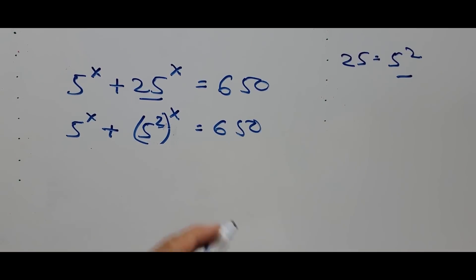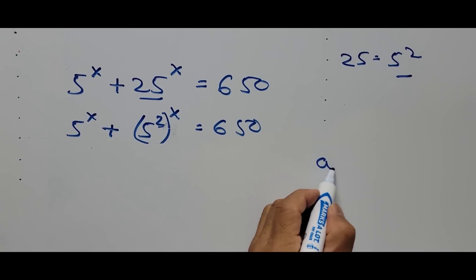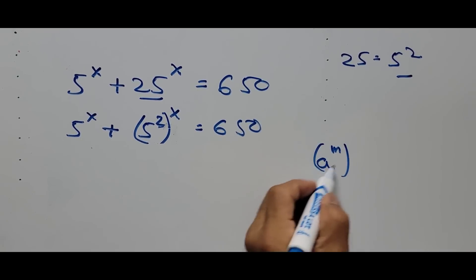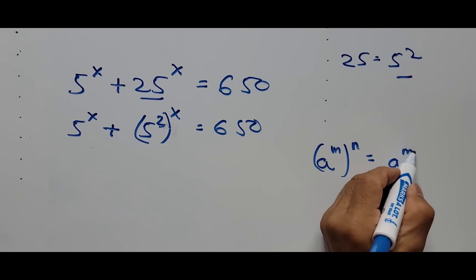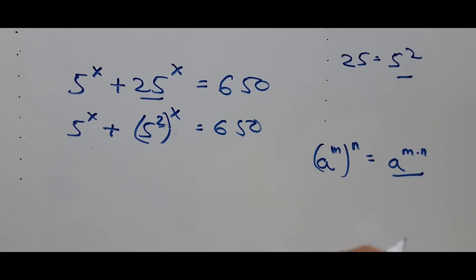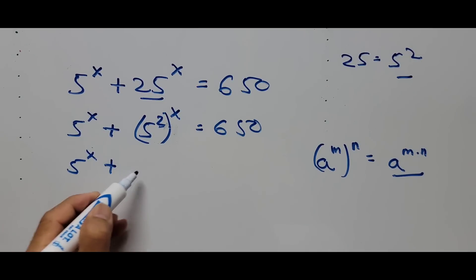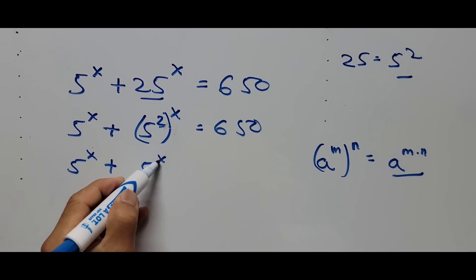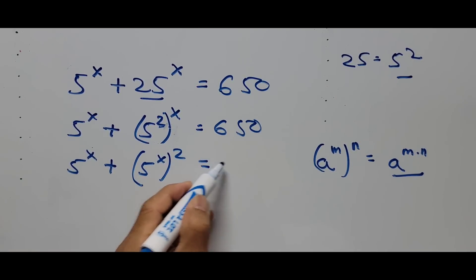On the second term, we apply the power rule: a raised to m raised to n equals a raised to m times n. That means we multiply the exponents, so we get 5 raised to x plus 5 raised to the quantity x times 2, which is 5 raised to 2x, equals 650.